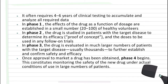It often requires four to six years of clinical testing to accumulate and analyze all required data. In Phase 1, the effects of the drug as a function of dosage are established in a small number — 20 to 100 — of healthy volunteers. In Phase 2, the drug is studied in patients with the target disease to determine its efficacy, or proof of concept, and the doses to be used in follow-up trials. In Phase 3, the drug is evaluated in a much larger number of patients with the target disease — usually thousands — to further establish and confirm safety and efficacy.